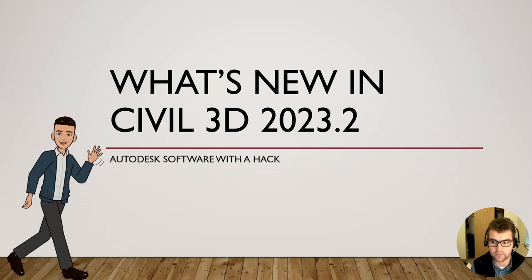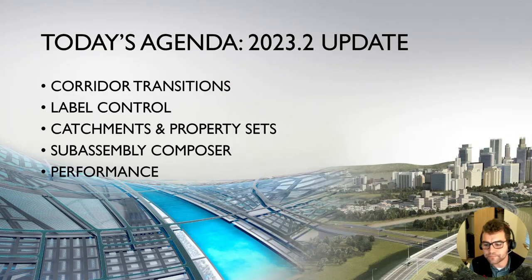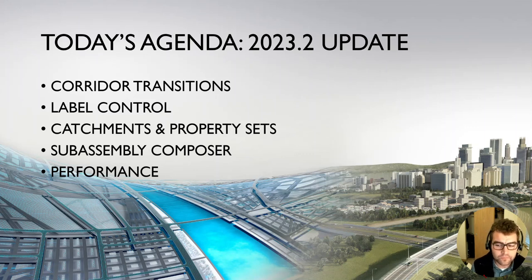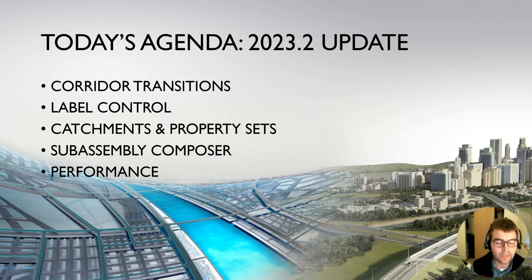Today's agenda covers the dot-two update with five big things: corridor transitions with a new 'Edit Corridor Transitions' button that streamlines corridor workflows; label control focused on performance; catchments and property sets within Project Explorer; Subassembly Composer improvements; and performance improvements mainly around opening files and updating corridors. Also, Project Explorer is now included with Civil 3D — you do not need the AEC Collection.